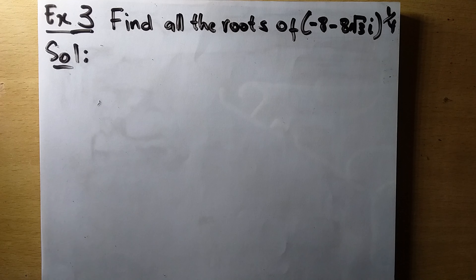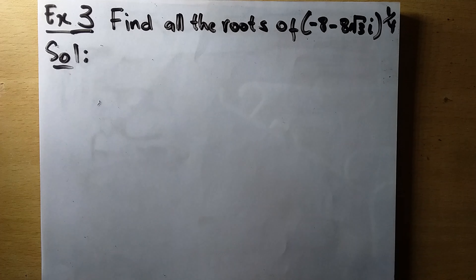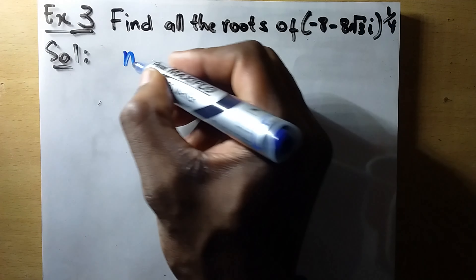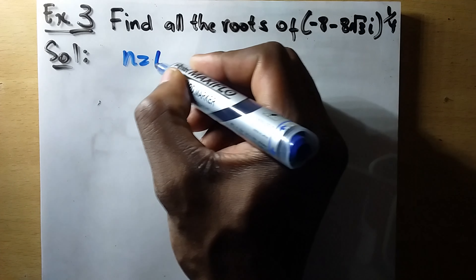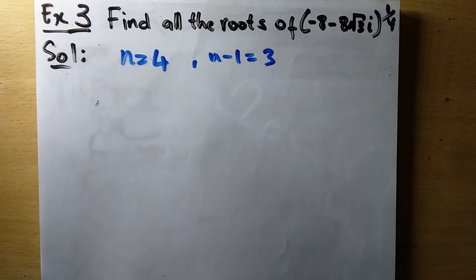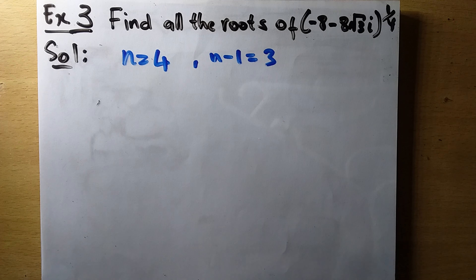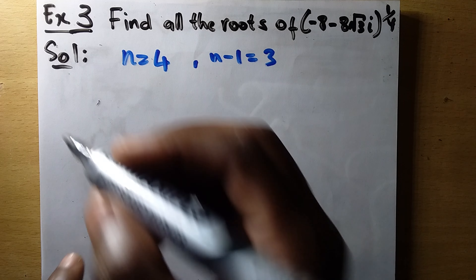Based on the exponent that we have here — 1 over 4 — this implies that our n is equal to 4, and our n minus 1 is equal to 3. So we have four roots. Let us go through it.